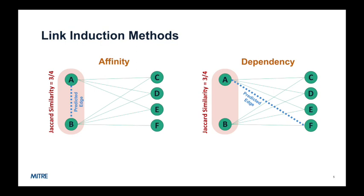In this illustrative example, nodes A and B are deemed to be sufficiently similar. Traditional affinity-based link prediction predicts that node A and B will themselves become linked.